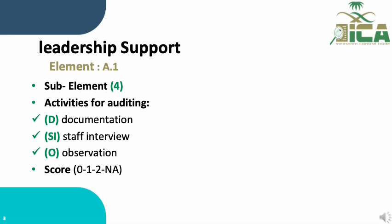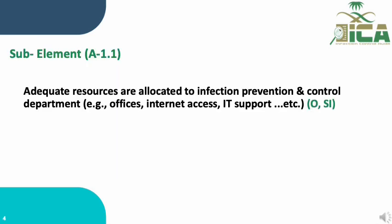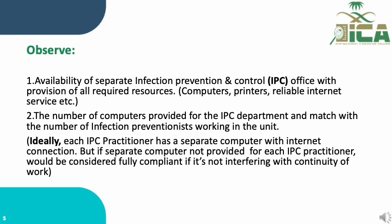A1.1: Adequate resources are allocated to the Infection Prevention and Control department — example: office, IT support. This is evaluated by observation and interview. By observation, number one: availability of a separate IPC office with the provision of all required resources.